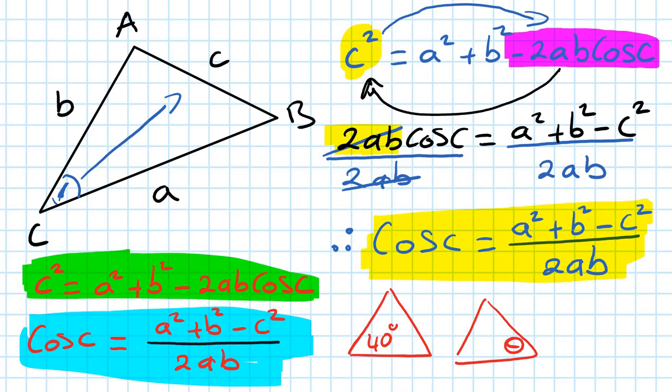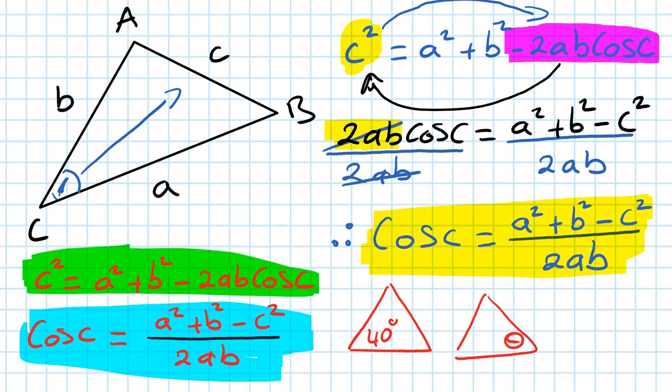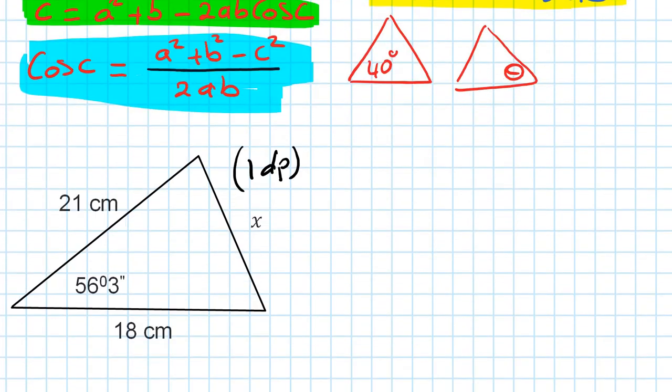For a right-angle triangle, use SOH-CAH-TOA. Very simple. And if you're stressed and can't remember, if you try the sine rule and it doesn't work, you can use the cosine rule — so not to worry. Alright, let's do some examples.